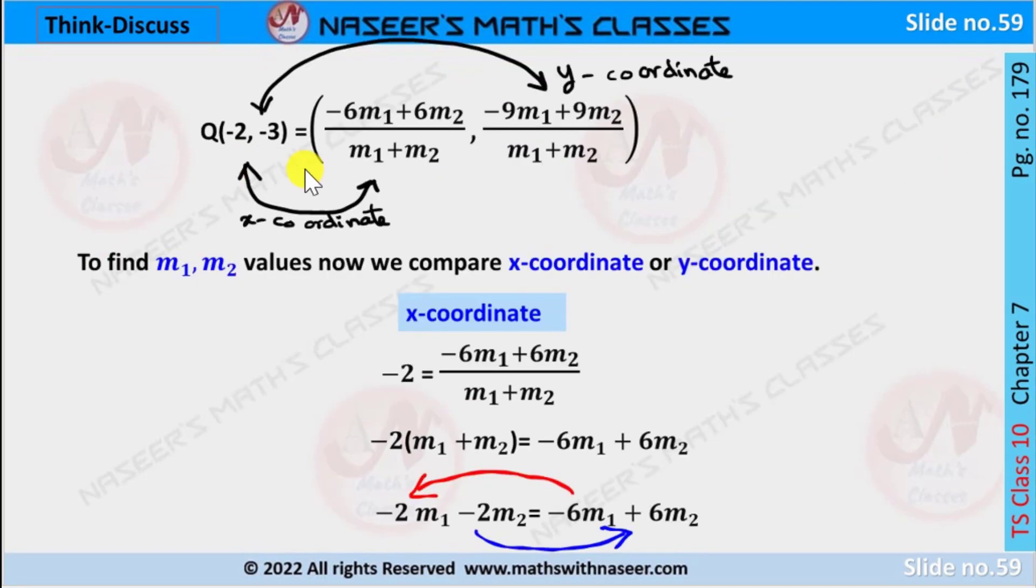To find the m₁ and m₂ values, now we compare x-coordinate or y-coordinate. So here we compare the x-coordinates, then we can write it as -2 equals -6m₁ + 6m₂ over m₁ + m₂.